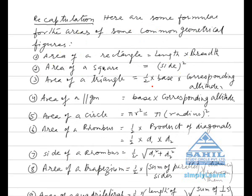Number 3: area of a triangle is equal to 1/2 multiplied by base multiplied by corresponding altitude. Number 4: area of a parallelogram is equal to base into corresponding altitude.